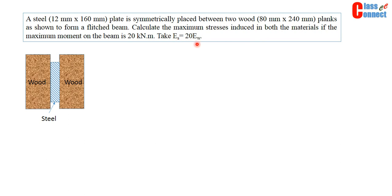Take E_S equal to 20 E_W. This is steel, the 12 mm width and 160 mm height. This is wood, 80 mm width and 240 mm height as shown.